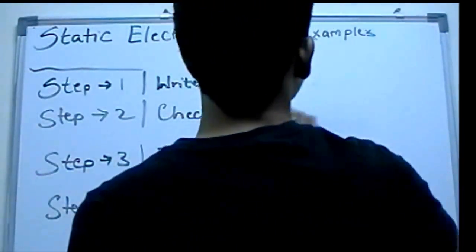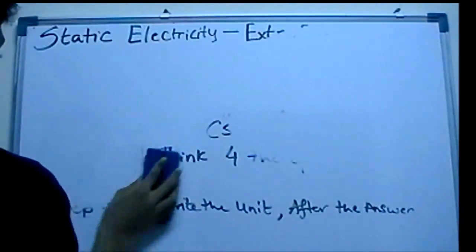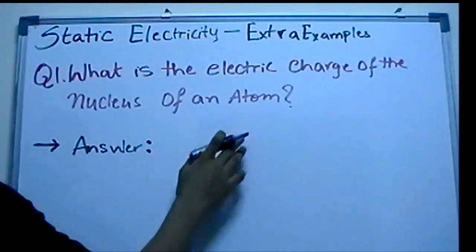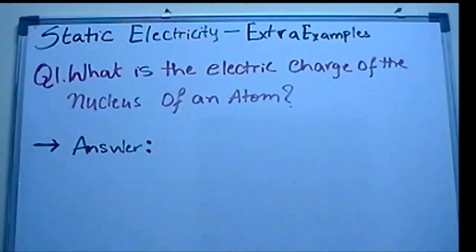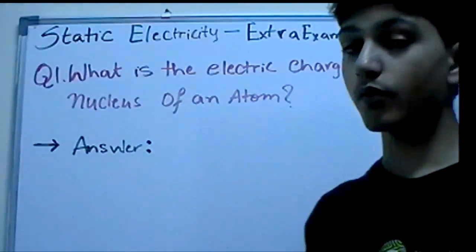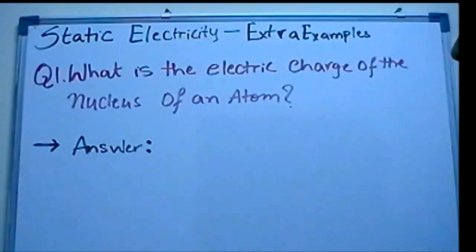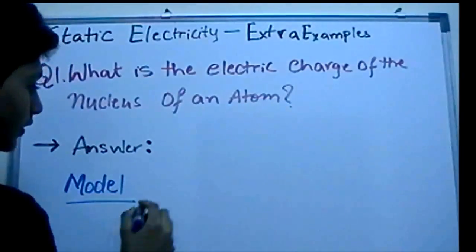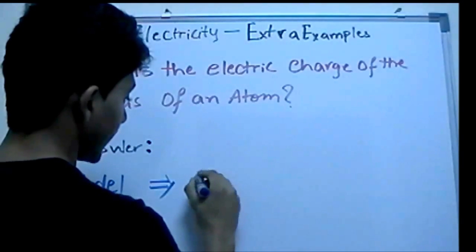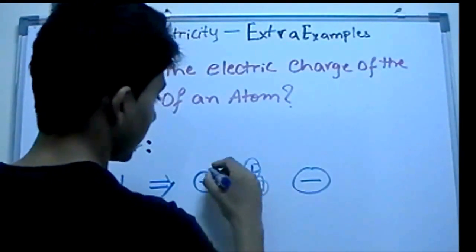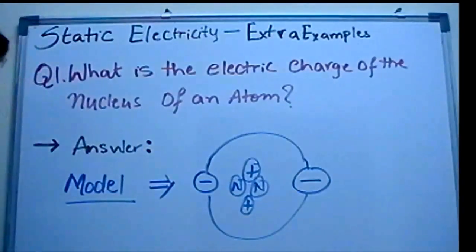Let's read the first question on the whiteboard. It says: what is the electric charge of the nucleus of an atom? To find this answer, it's a good idea to draw a diagram or model of the atom. The model basically looks like this: you have electrons here, neutrons here, and protons here, with electrons revolving in a circle around the nucleus.